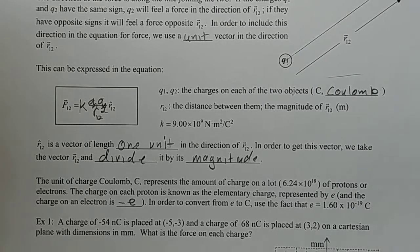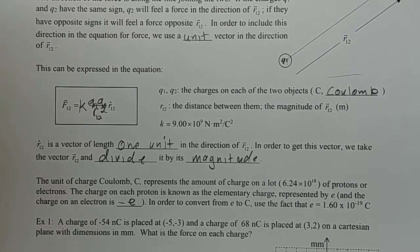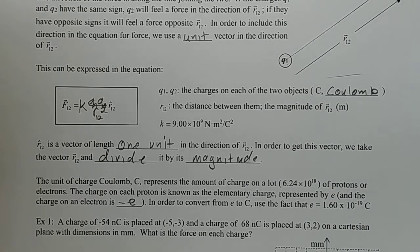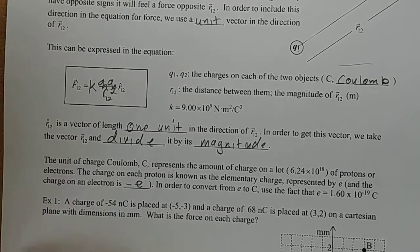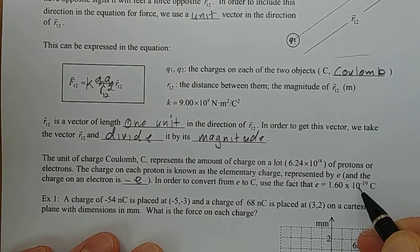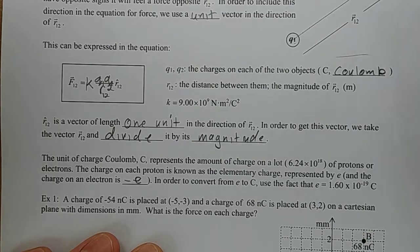This will come up because we will have some questions where rather than having a charge where they tell you how many Coulombs there are, they'll tell you that it is a positively charged ion or a negatively charged ion or it's a proton or something like that. So you need to know that this is the amount of charge for each elementary charge it has.